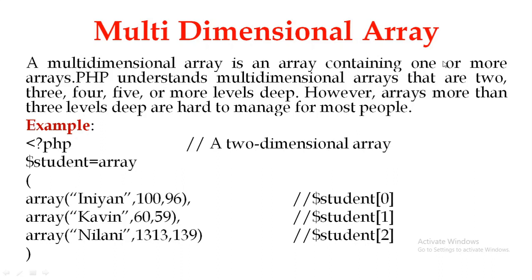Multi-dimensional array is an array containing one or more arrays - one row is a set-up array. PHP understands multi-dimensional arrays that are 2-dimensional, 3-dimensional, 4-dimensional, 5-dimensional, or more levels deep. Every level goes deeper. But we can easily understand 2-dimensional, so we will focus on 2-dimensional array. We know the 2D effect and the 3D effect. Here we are going to learn only 2-dimensional array.